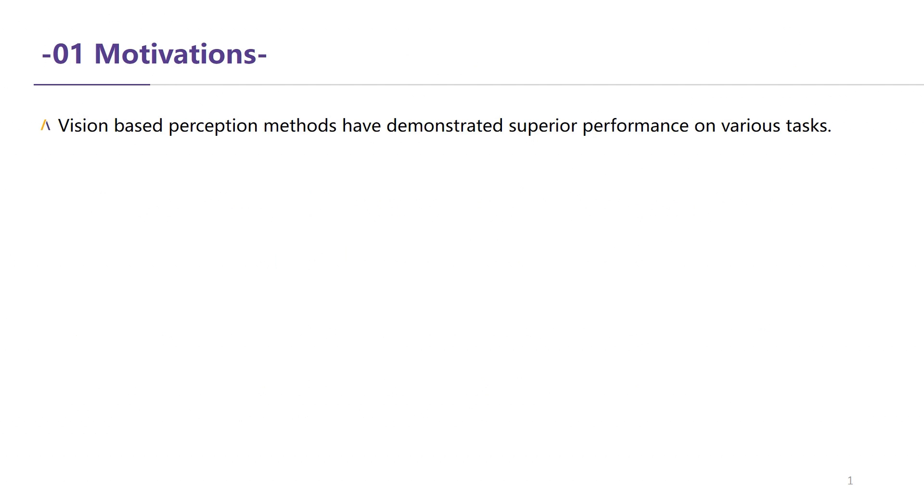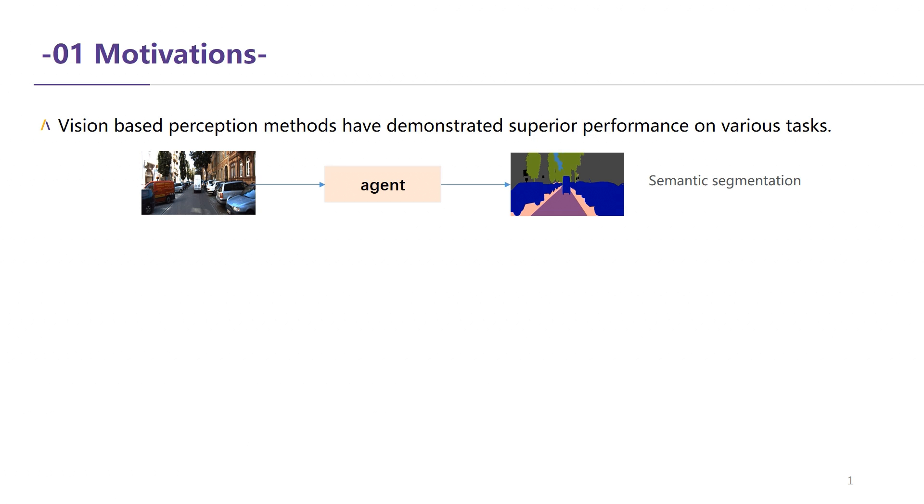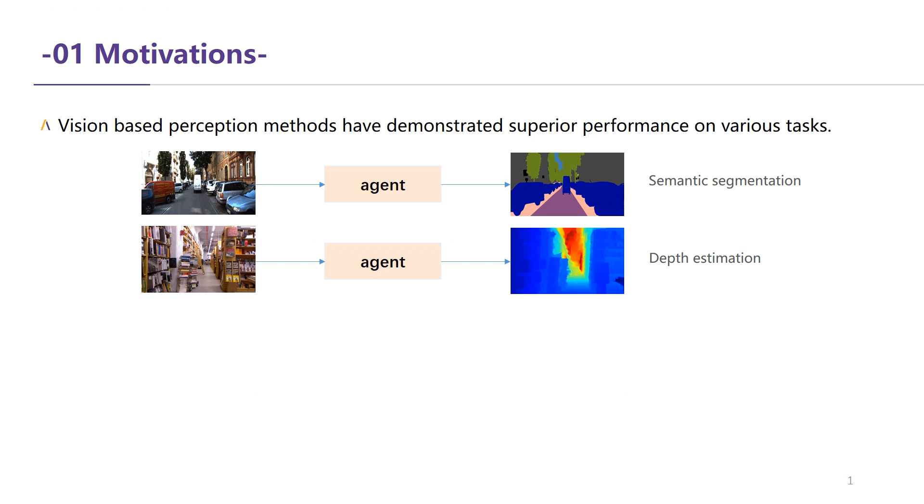In recent years, vision-based algorithms have brought significant progress for robots' perception on various tasks, such as semantic segmentation, depth estimation, and object detection.